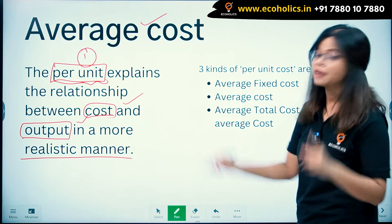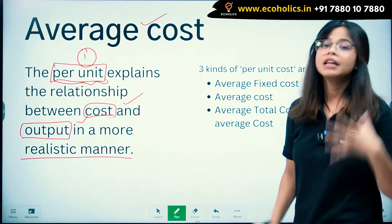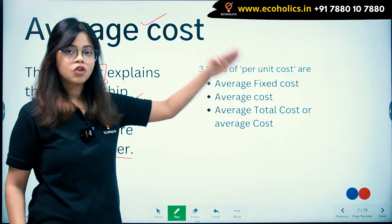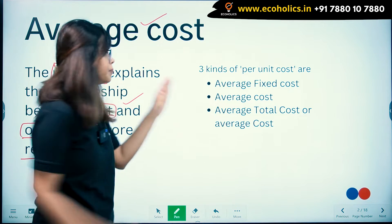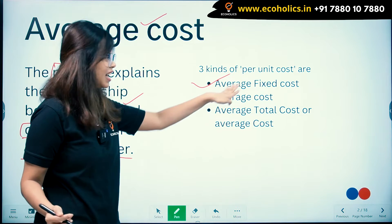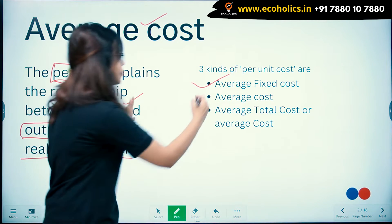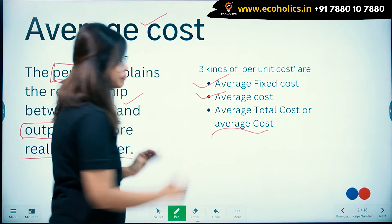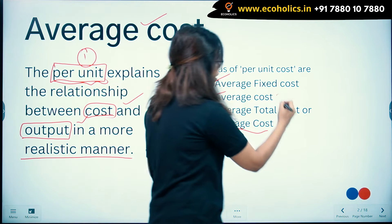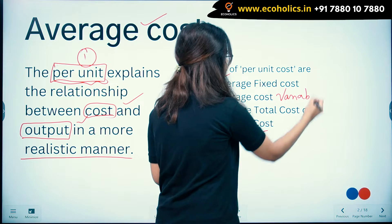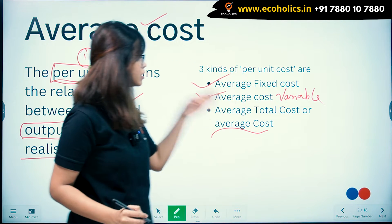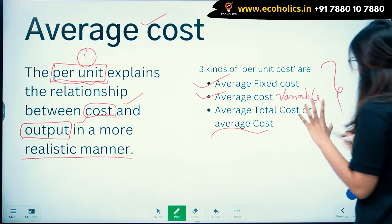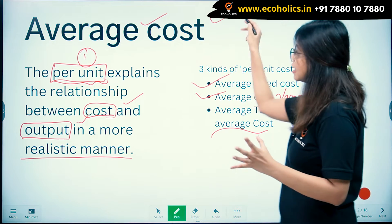Per unit cost explains the relationship between cost and output. Think from a producer's perspective. Under average cost, we learn three kinds of per unit cost: average fixed cost (AFC), average variable cost (AVC), and average total cost, also called average cost (AC). These are what we are going to understand under the heading of average cost.